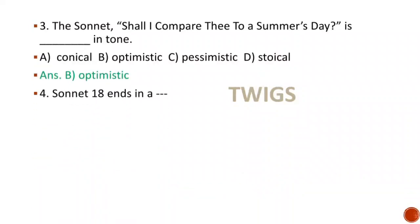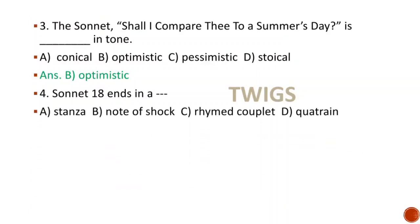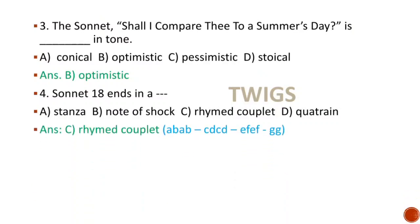Next MCQ: Sonnet 18 ends in a — options are note of shock, rhymed couplet, quatrain. We know that William Shakespeare's sonnet possesses three quatrains and a concluding couplet. Hence the right answer is option C, rhymed couplet. The rhyme scheme of William Shakespeare's Sonnet 18 is ABAB CDCD EFEF GG, and the rhyme scheme of the couplet is GG.